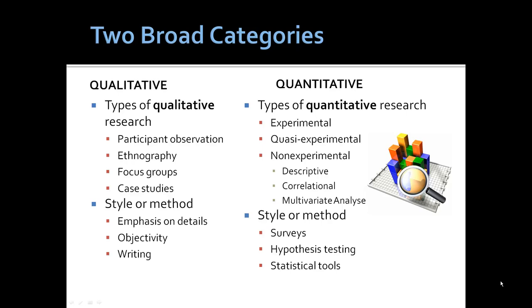Social science research methods fall into two broad categories: qualitative and quantitative. The biggest difference is that quantitative research tests hypotheses by collecting and analyzing data using statistical tools and a pre-designed organizational plan. The other type, qualitative, often begins with observational data or ethnography.